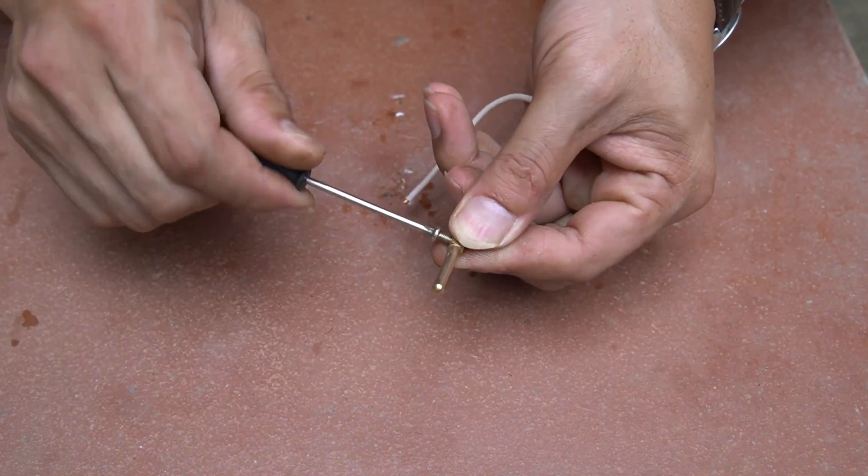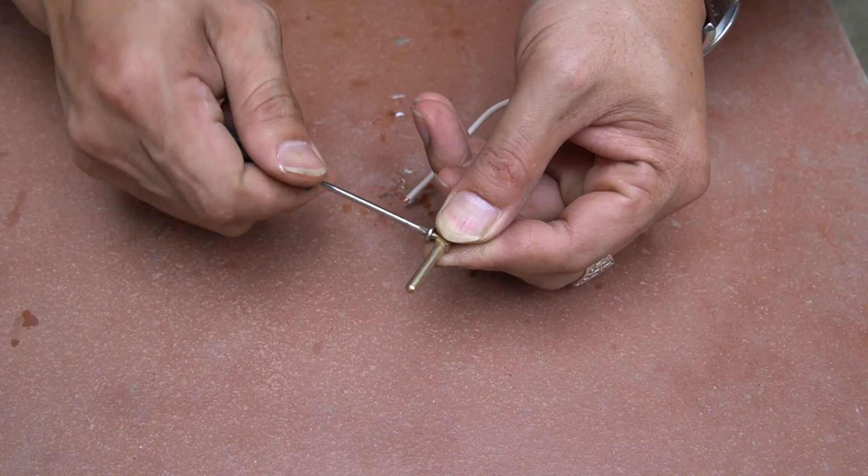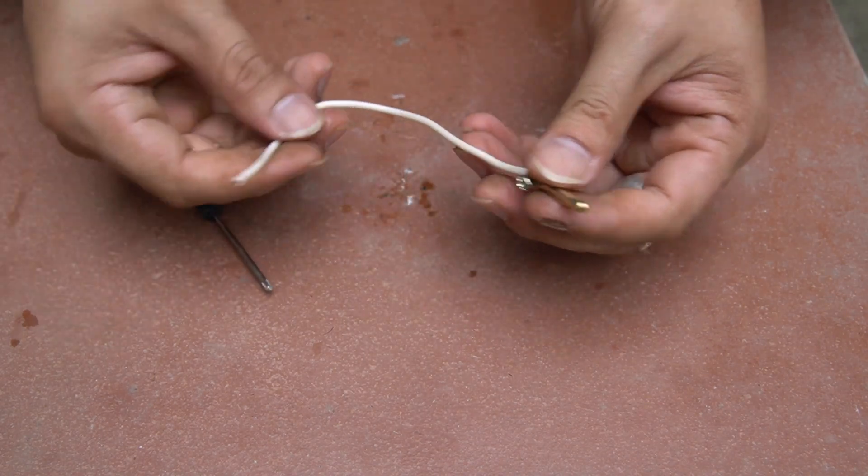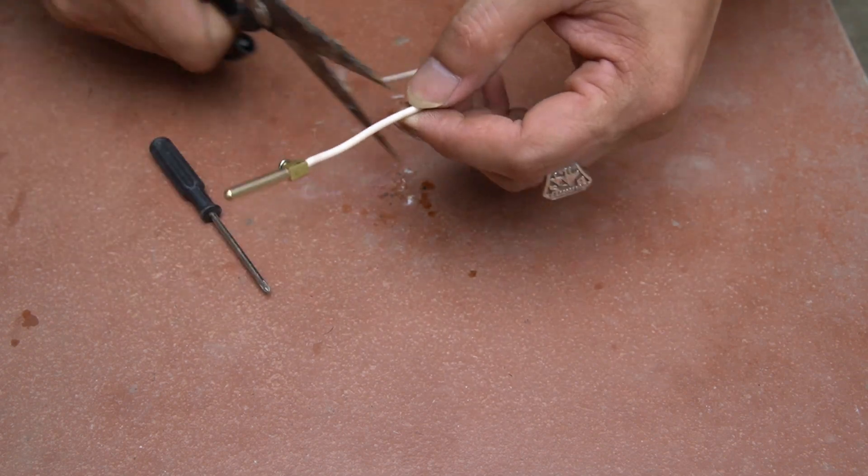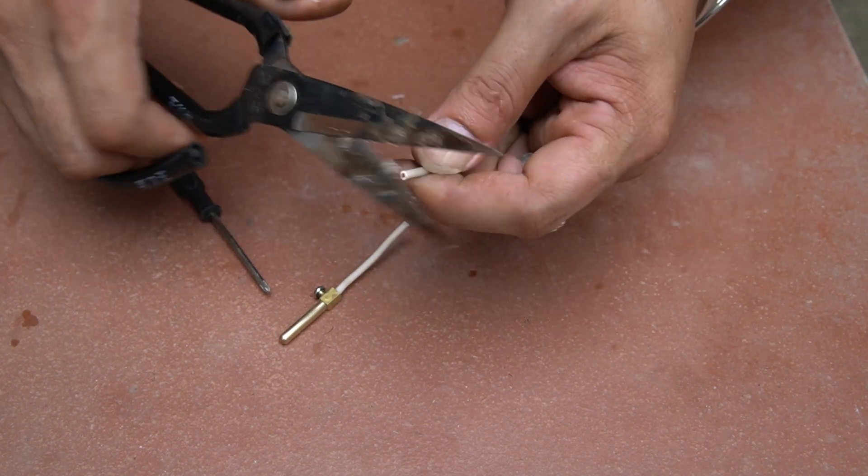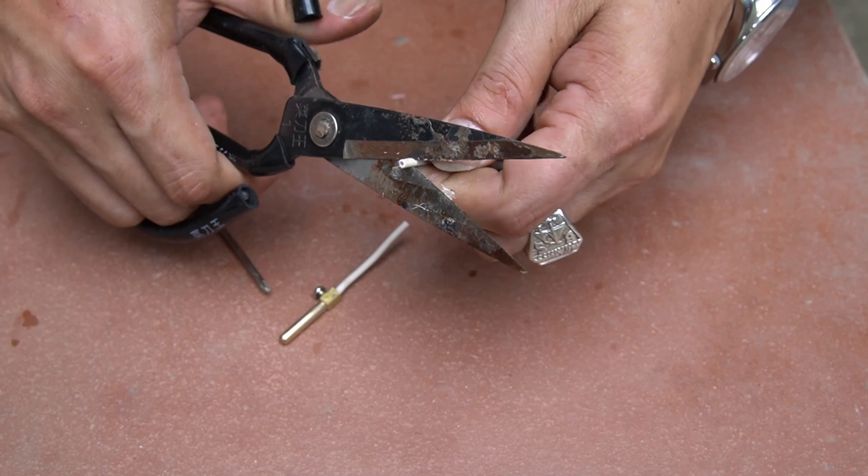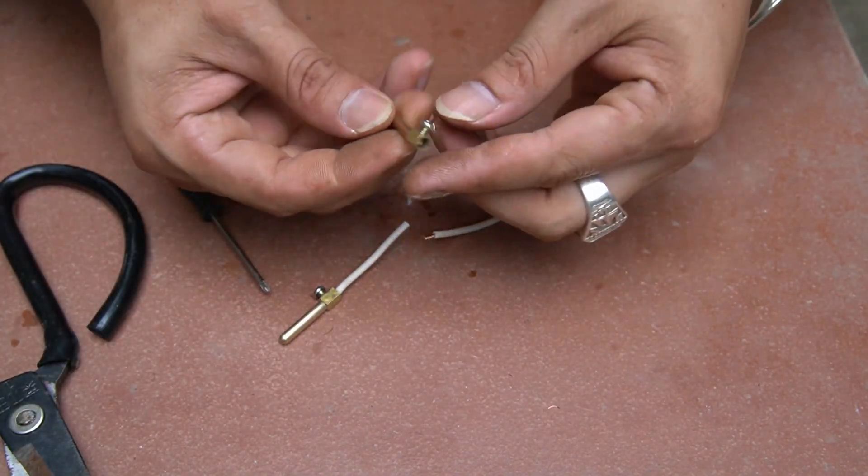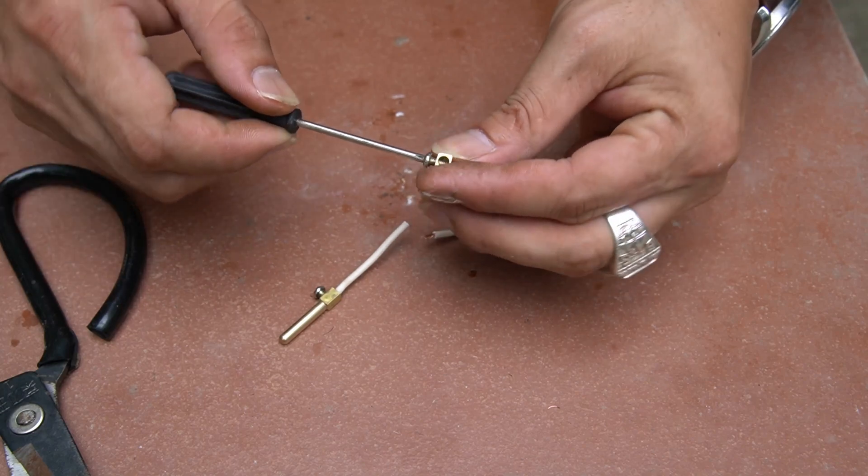Use a screwdriver to screw them together tightly. Use scissors to cut off the excess wire. Reuse the excess wire to attach to the other leg.